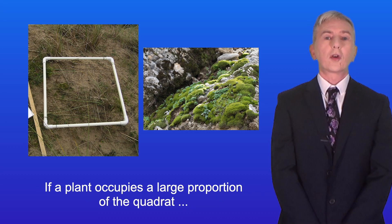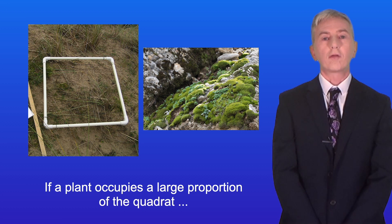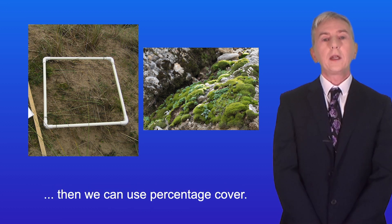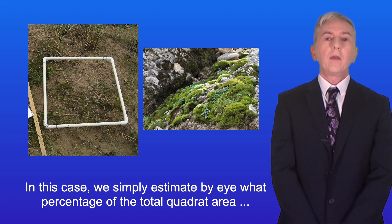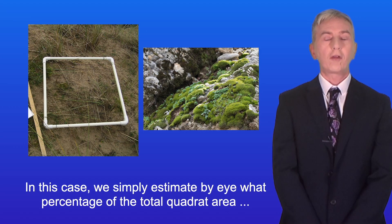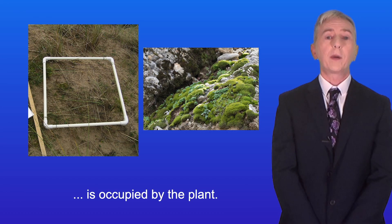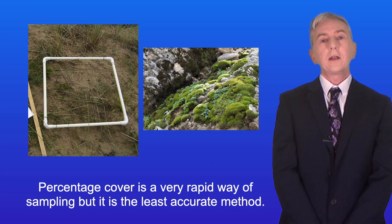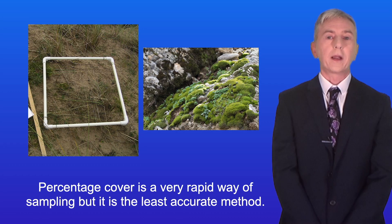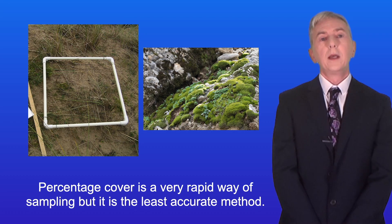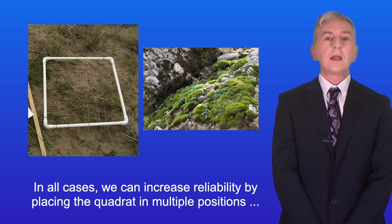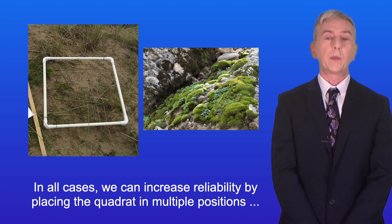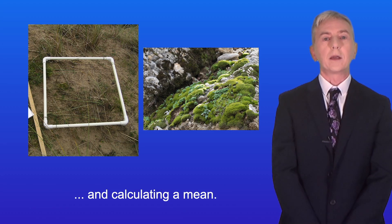Now if a plant occupies a large proportion of the quadrat, then we can use percentage cover. In this case, we simply estimate by eye what percentage of the total quadrat area is occupied by the plant. Percentage cover is a very rapid way of sampling, but it's the least accurate method. In all cases, we can increase reliability by placing the quadrat in multiple positions and calculating a mean.